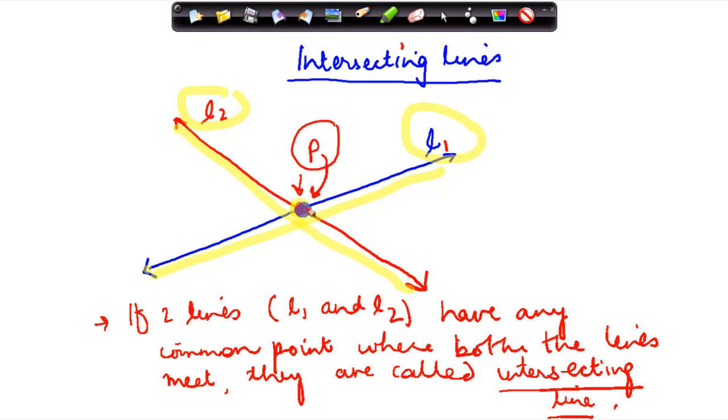Right, so basically if two lines which in our example is l1 and l2, have any common point, which is the common point here P where both the lines meet.